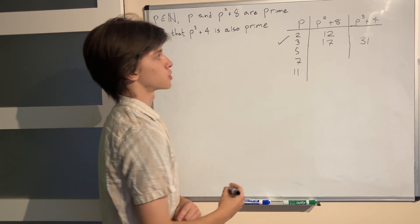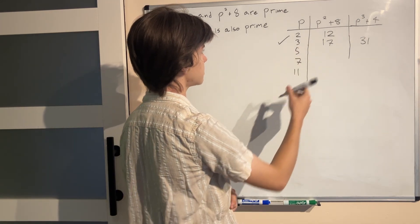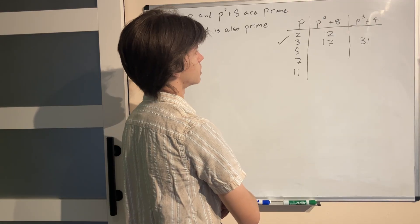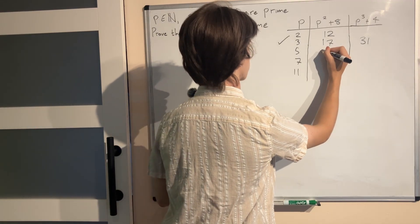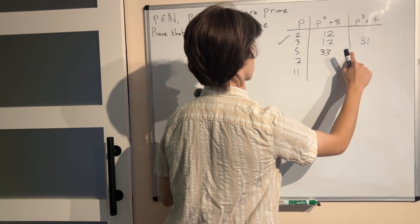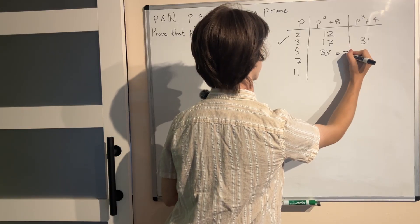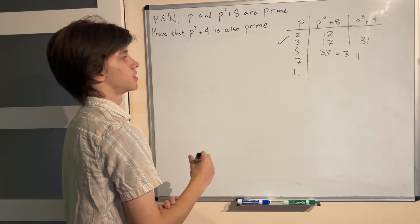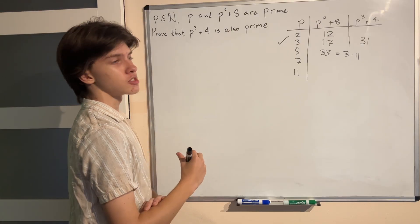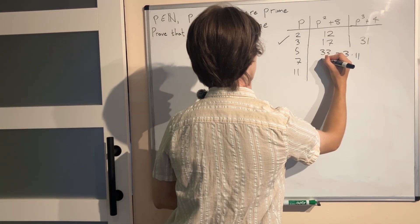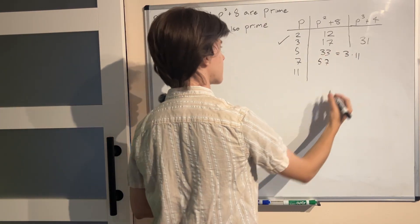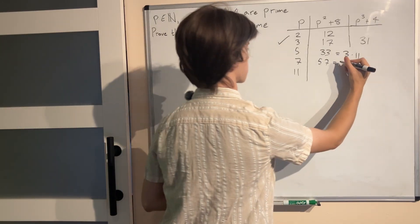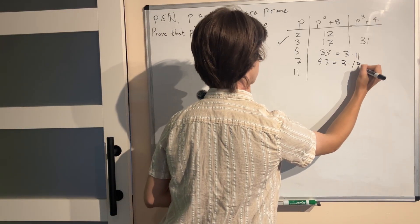Now for p equals 5 what will happen? p² + 8 that's going to be 25 + 8 which is 33 and of course that is not prime because it's equal to 3 times 11. Okay then for 7 we get 49 + 8 which is 57 and it may seem prime but it's actually not because it's equal to 3 times 19.